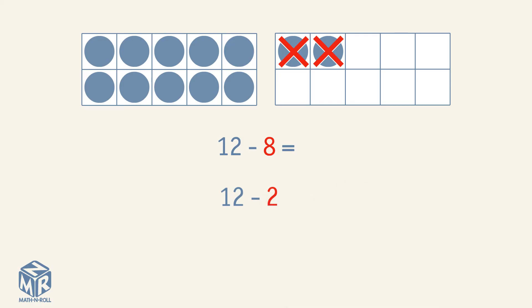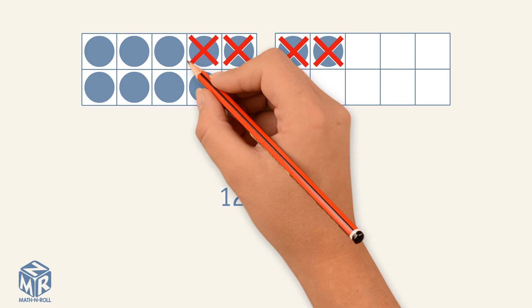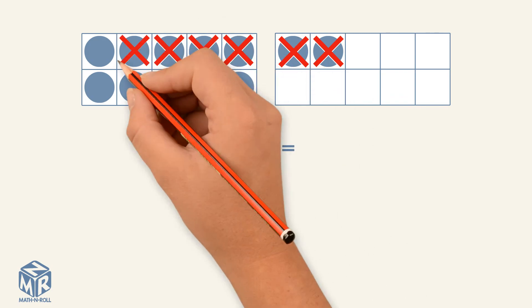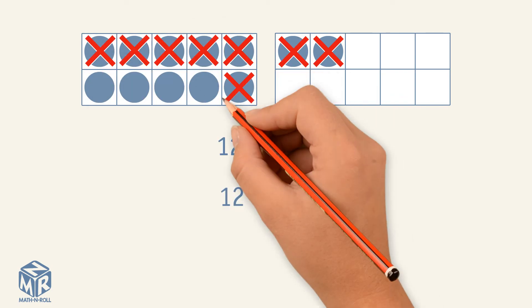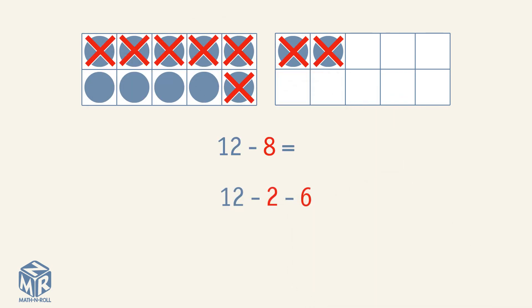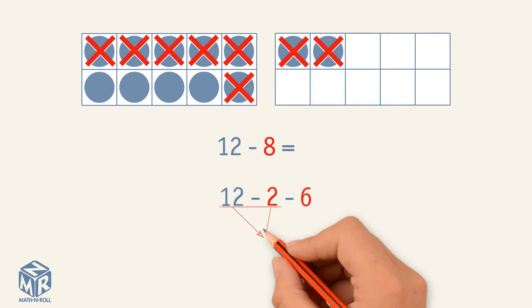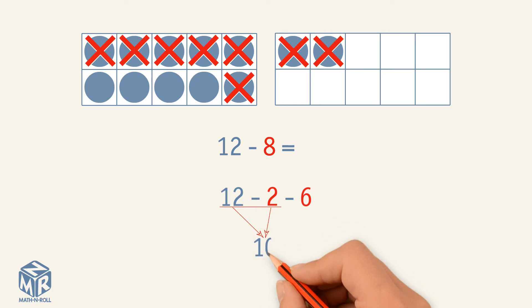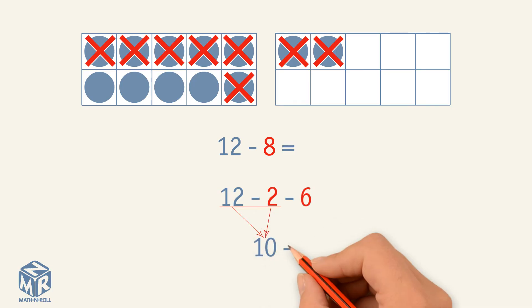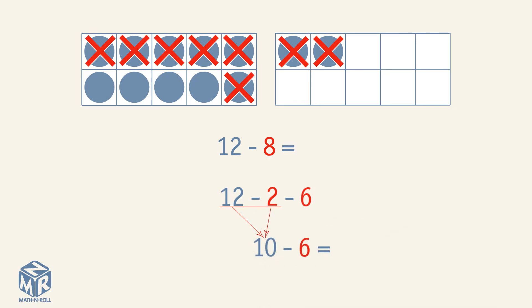How many more to subtract 8? We subtract 6 more. 12 minus 2 equals 10. 10 minus 6 equals 4. So 12 minus 8 equals 4.